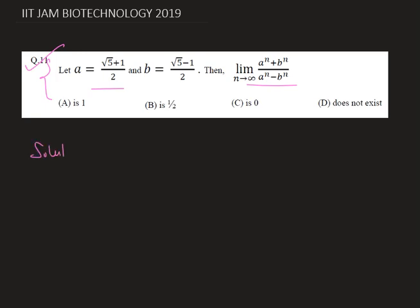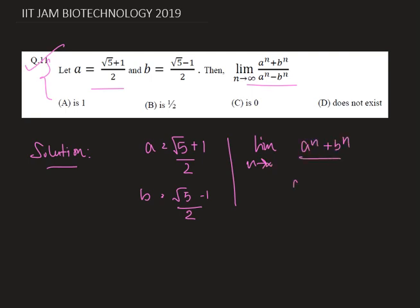Let us start the solution. We are given that a equals root 5 plus 1 divided by 2 and b equals root 5 minus 1 divided by 2. We need to find the limit n tends to infinity of a to the power n plus b to the power n divided by a to the power n minus b to the power n.